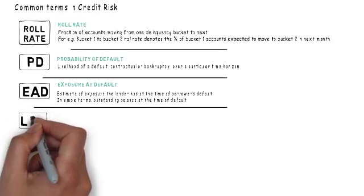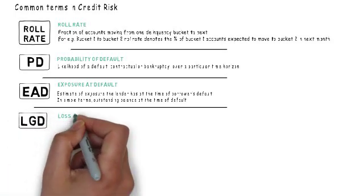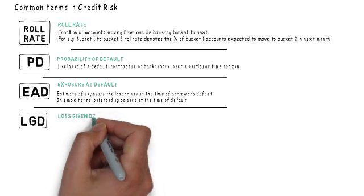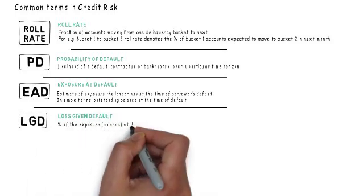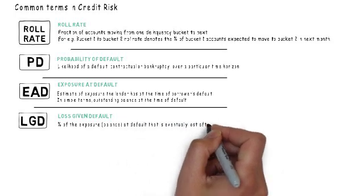LGD refers to loss given default. LGD is directly linked to recoveries and asset sales. It is the percentage of exposure at the time of default that is eventually lost by the bank.